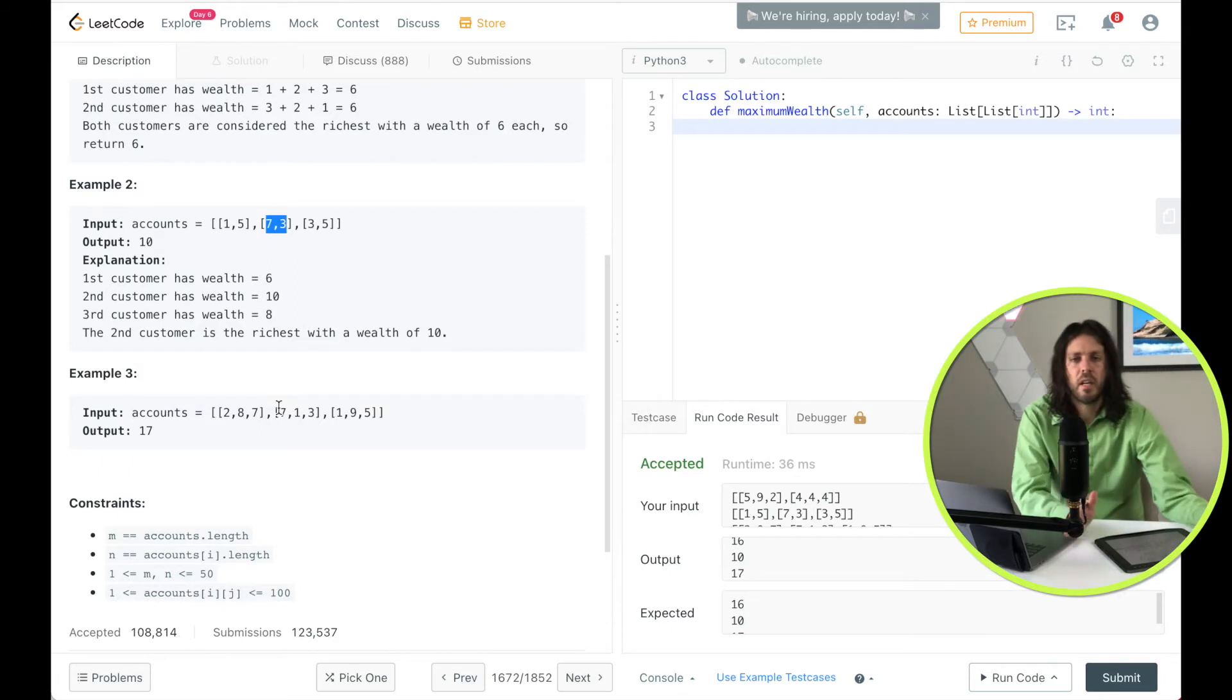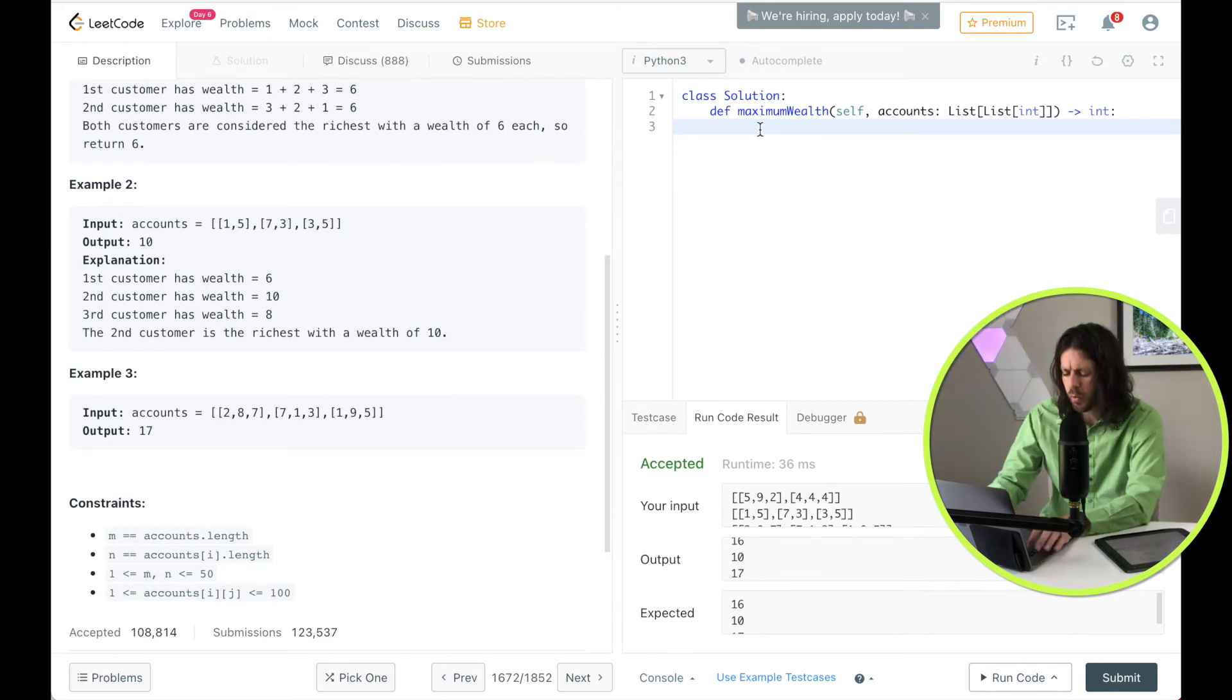So I've already coded the solution, not really much needed for pseudocode, because it's fairly straightforward. But I'll go ahead and code it, and we'll run through the example. So let's go ahead and start with max wealth is equal to zero. And then we will say for I in range, and we'll say length of accounts.